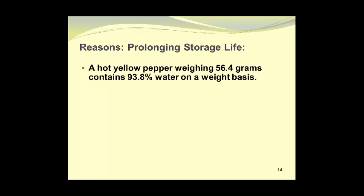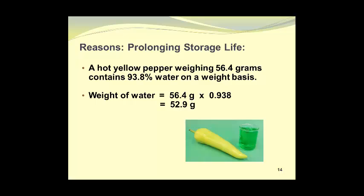Here we see a mango which weighs 353 grams. The beaker contains 300 grams of water, with some added food coloring to make it show up better in the photograph. Only 53 grams of solids will be present in that mango. A hot yellow pepper weighing 56.4 grams was found to contain 93.8% water on a weight basis. The weight of the water can be found by taking the weight of the pepper times the percent water as a decimal fraction, to give 52.9 grams of water.